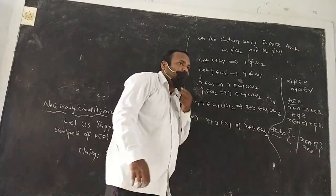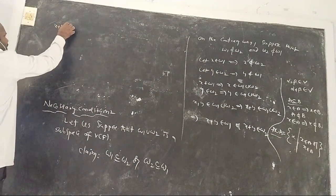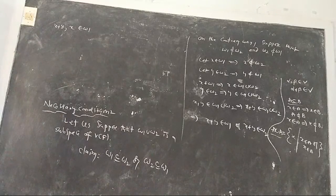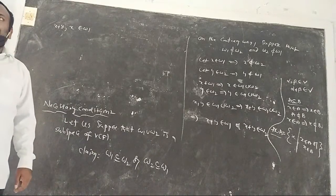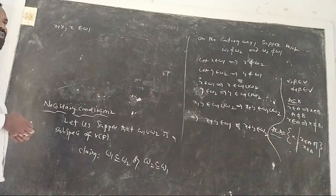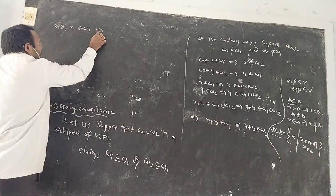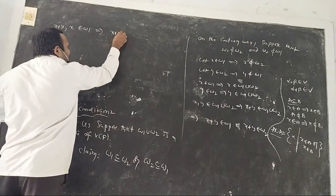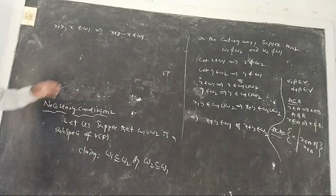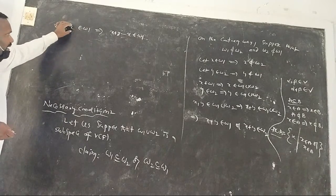Since x belongs to W1 and y belongs to W2, both belong to W1 union W2. Since W1 union W2 is a subspace, closure property is satisfied: x plus y belongs to W1 union W2. That means x plus y belongs to W1 or x plus y belongs to W2.